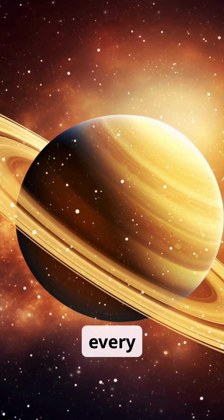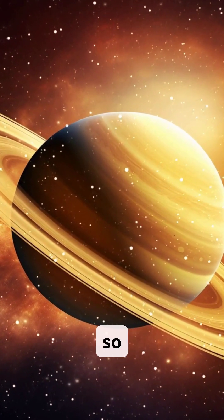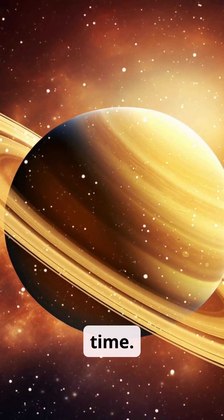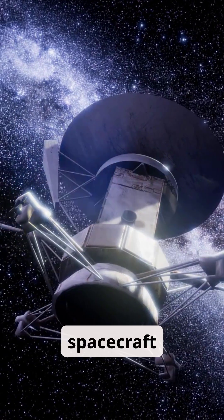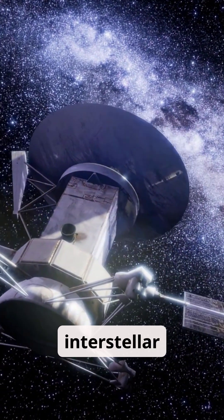This alignment only happens once every 176 years, so NASA had only one chance to launch Voyager 1 at the right time. If they had missed it, the spacecraft wouldn't have been able to reach interstellar space so quickly.